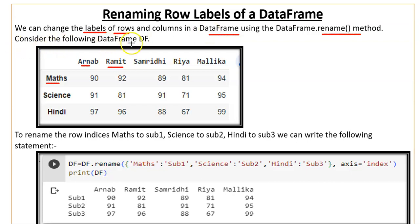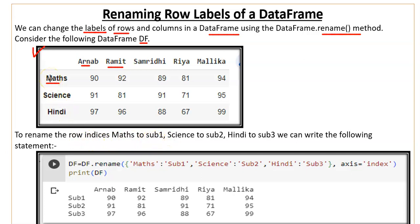Consider the following DataFrame called 'df'. We have a DataFrame where you have 3 rows: Math, Science, and Hindi, and 5 columns: 1, 2, 3, 4, 5. We want to rename the row labels — Math to Subject1, Science to Subject2, and Hindi to Subject3.